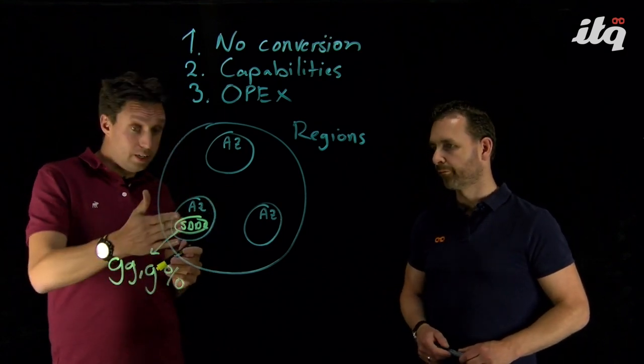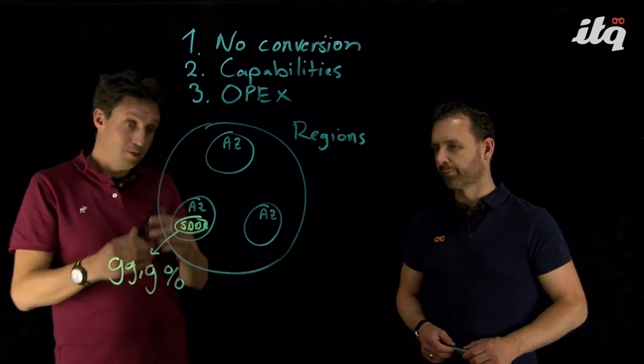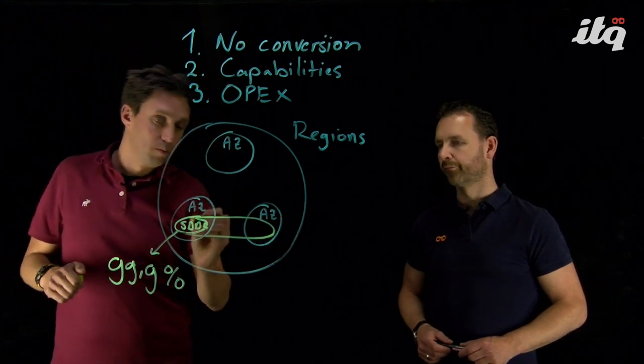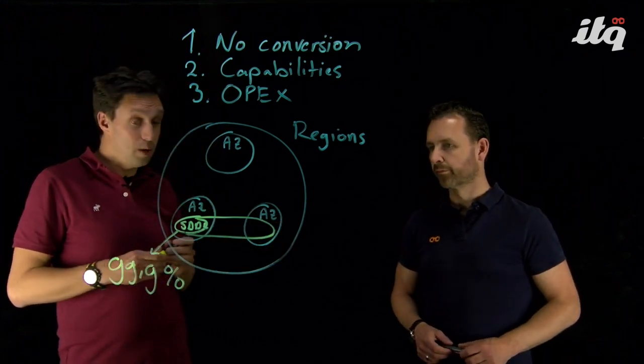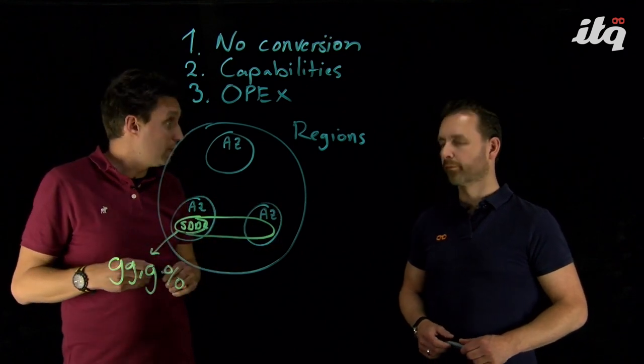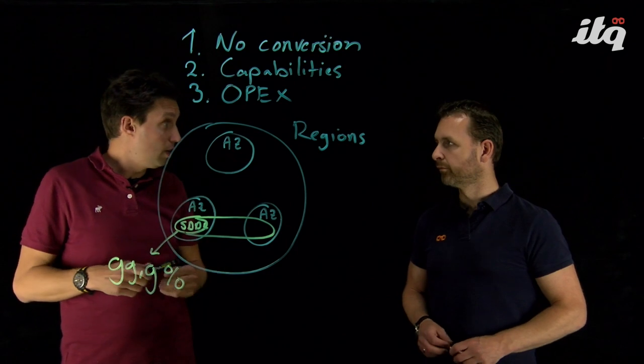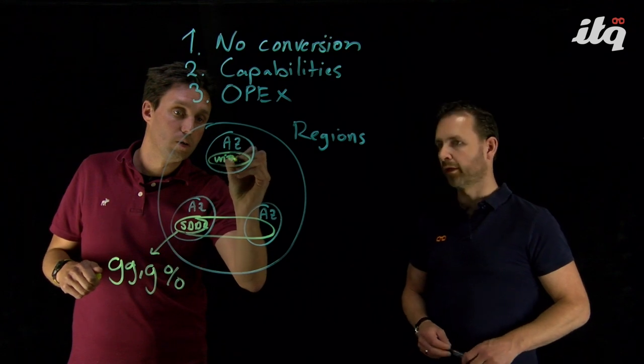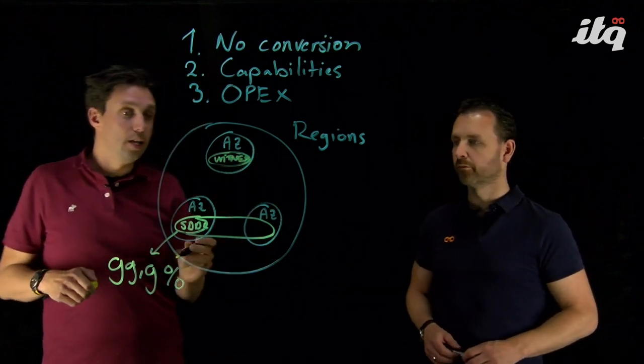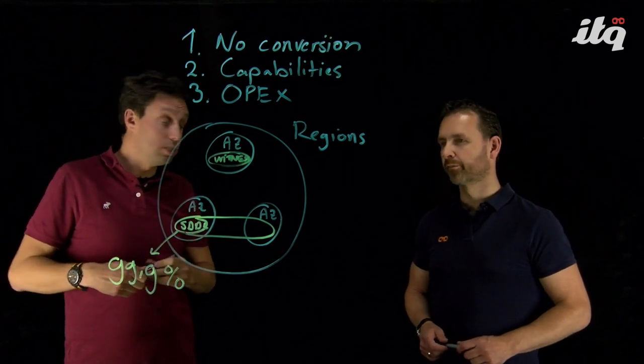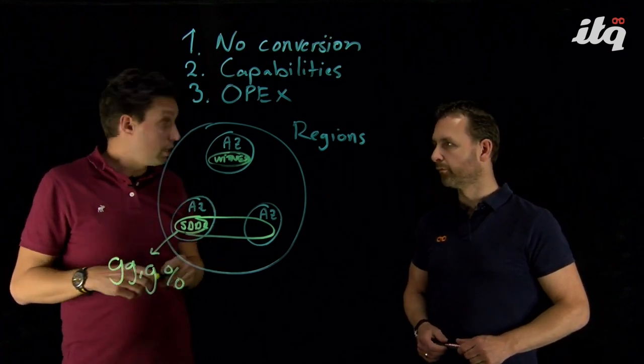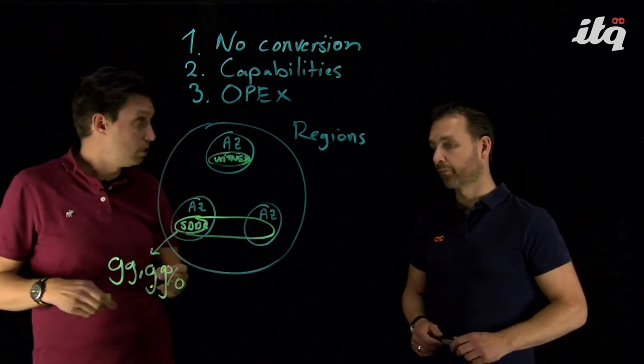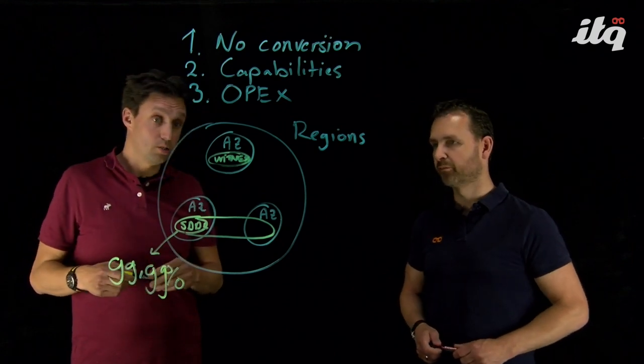So we can stretch a software-defined data center. We can stretch the VMware Cloud on AWS data center. And what that means is that we put some hosts in the second AZ as well. And we get a stretch cluster configuration with the vSAN storage underneath. And also, a so-called witness node is deployed to the third availability zone. And this will increase your SLA to 99.99%. Four nines. Sounds good.